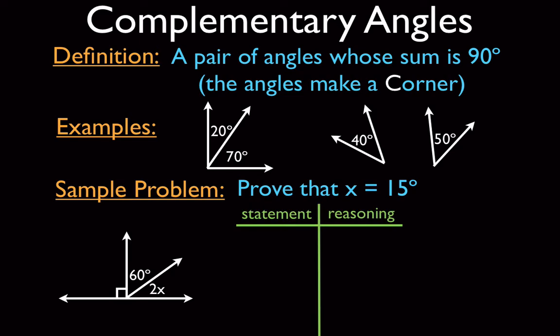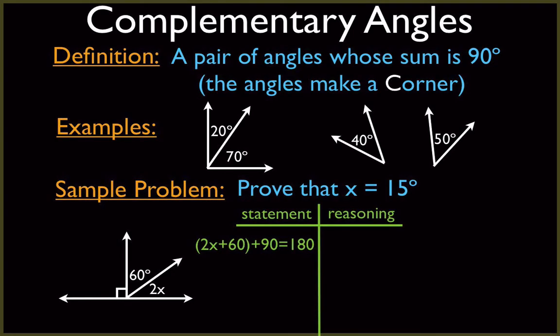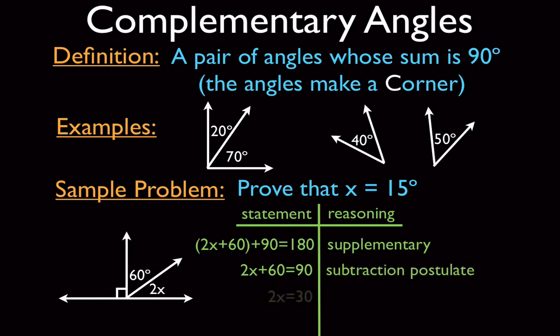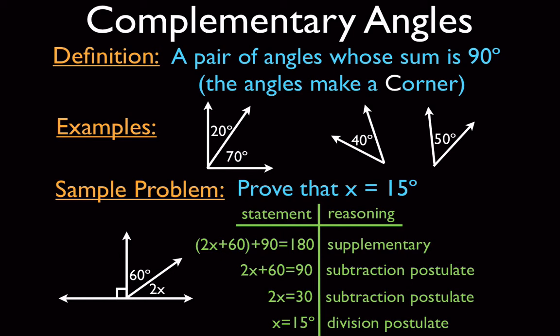In our two-column proof, we have 2x plus 60 plus 90 equals 180. We subtract 90 from both sides using the subtraction postulate, subtract 60 from both sides, and divide by 2 with the division postulate, getting x equals 15. So it turns out we were correct.